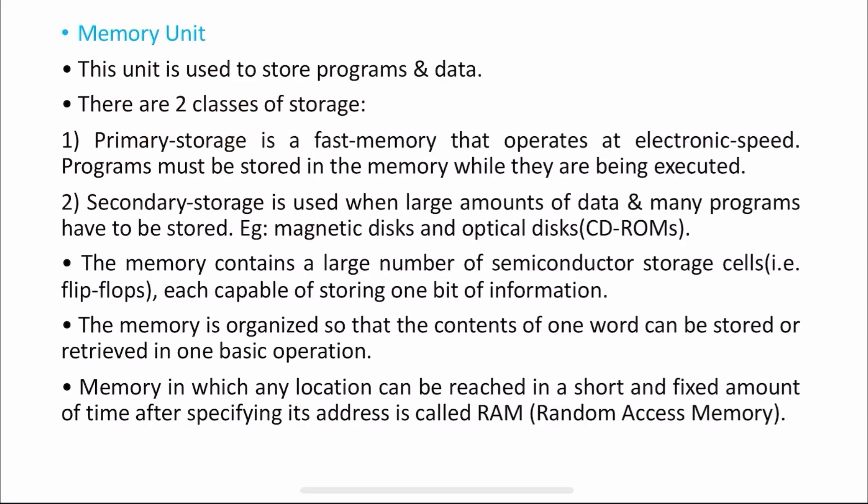Next is the memory unit. Whatever input you give, in the form of data or a program, that needs to be stored in the memory unit. There are two classes of memory: primary memory and secondary memory. Primary memory is a fast memory, also called primary storage. It operates at electronic speed. Whatever programs you are going to execute need to be stored in primary memory first before being passed to the processor.